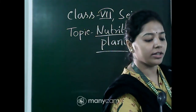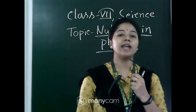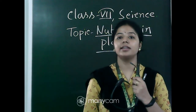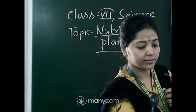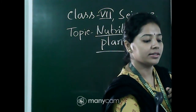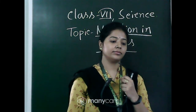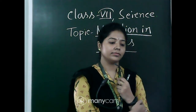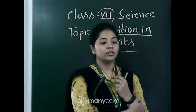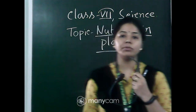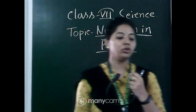Now the next question: Dash derived nutrition from dead and decaying matter. The answer is saprotrophs. Not saprotrophic — saprotrophic is the mode of nutrition. The organisms that possess such nutrition are called saprotrophs.